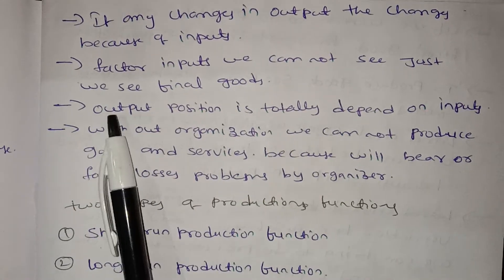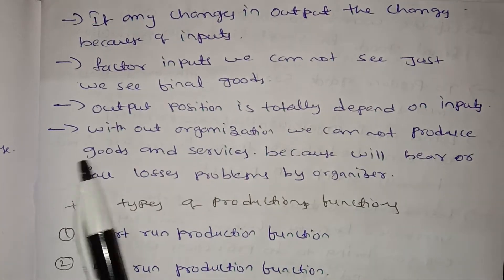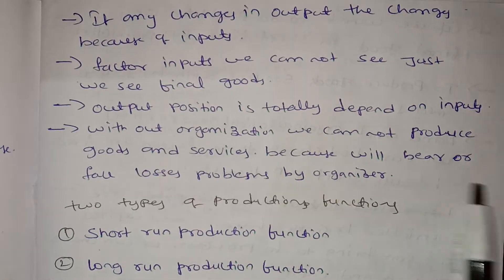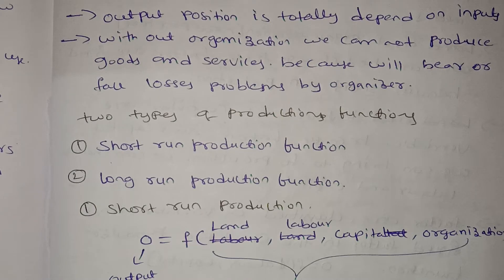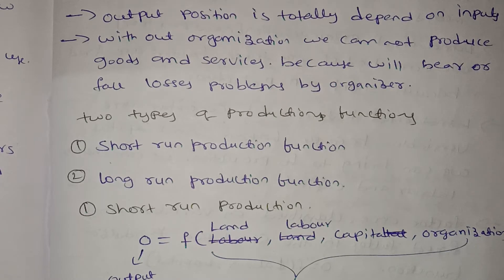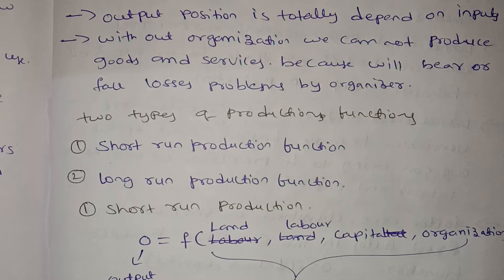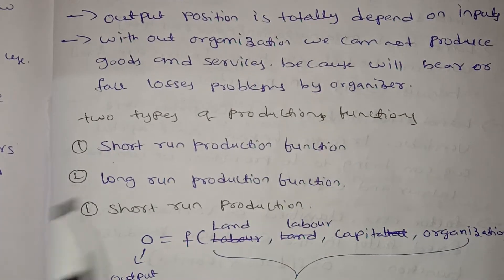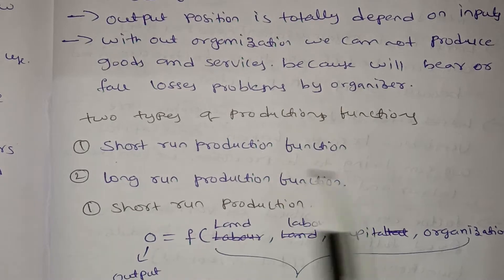Without organization we cannot produce goods and services, because we will face losses and problems. Organization can be a sole proprietorship, partnership, and so on. There are two types of production functions: short-run production function and long-run production function.